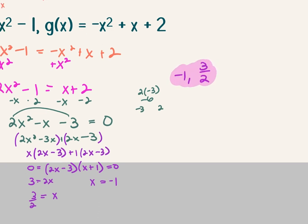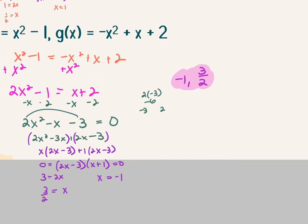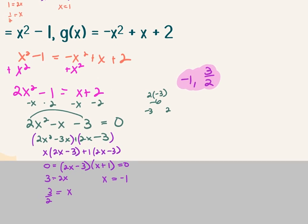For the second example: set f of x equal to g of x — x squared minus 1 equals negative x squared plus x plus 2. Add the x squared: 2x squared minus 1 equals x plus 2. Move everything over — subtract x and 2: 2x squared minus x minus 3 equals 0. Factor using first times last: 2 times negative 3 is negative 6; factors of negative 6 that sum to negative 1 are negative 3 and positive 2. So 2x squared minus 3x plus 2x minus 3, factor by grouping: x times (2x minus 3) plus 1 times (2x minus 3), giving (2x minus 3)(x plus 1). Split and solve: x equals 3 halves and x equals negative 1. If it's not factorable, your backup options are the quadratic formula or completing the square — those always work.